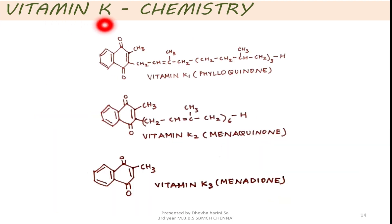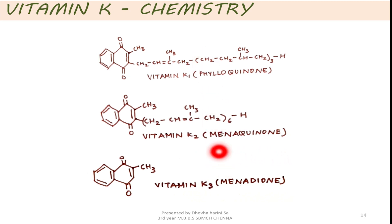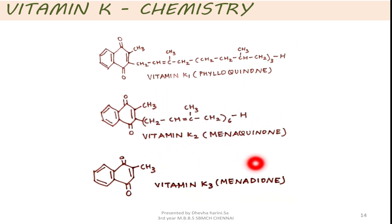Now we are moving on to the next topic, which is vitamin K. We will start off with its chemistry. Vitamin K exists in three different forms: vitamin K1, also called phylloquinone; vitamin K2, also called menaquinone; and vitamin K3, also called menadione. These three vitamins are naphthoquinone derivatives and they are stable to heat. The common thing in these three vitamins is the presence of the isoprenoid side chain, which is absent in vitamin K3. Their activity can be lost by oxidizing agents, irradiation, strong acids and alkalis.